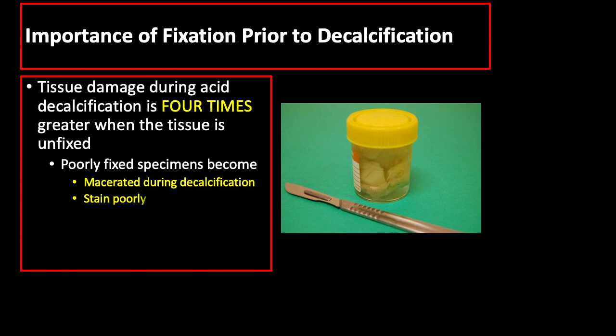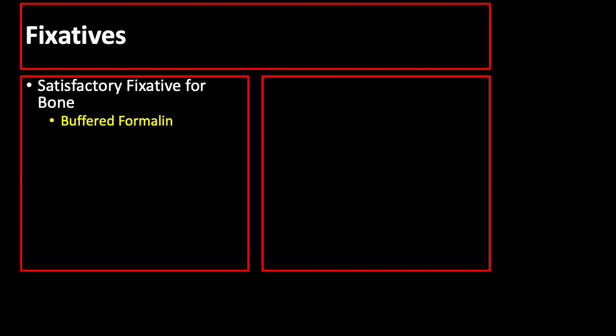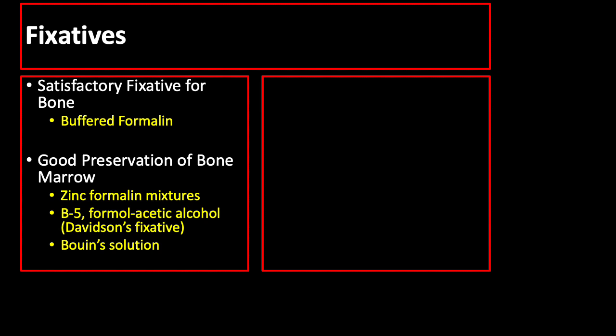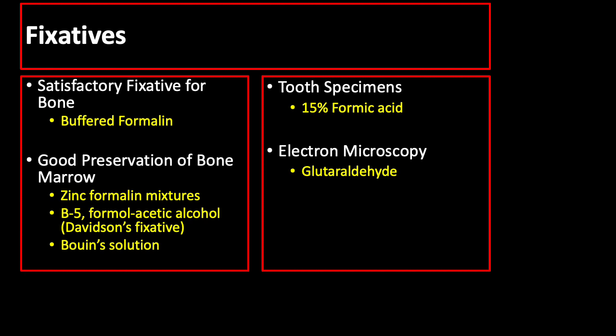Poorly fixed specimens become macerated during decalcification, and they also stain poorly. The fixatives recommended when there is a plan for decalcification include buffered formalin, which is a satisfactory fixative for bone. Where preservation of bone marrow is important, some laboratories use alternatives such as zinc formalin mixtures, B5 formal acetic alcohol, Davidson's fixative, or Bowen's solution. For tooth specimens, a better choice of fixative is 15% formic acid. And if there is a plan for electron microscopy, glutaraldehyde is the best choice.